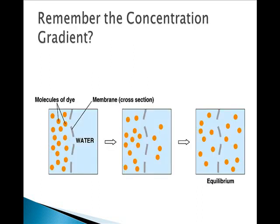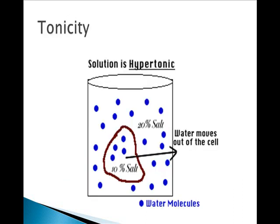Remember the concentration gradient — the more you have on one side of the membrane, the faster the concentration gradient moves until you hit equilibrium. Before equilibrium is reached, you often describe the solution by the term tonicity.